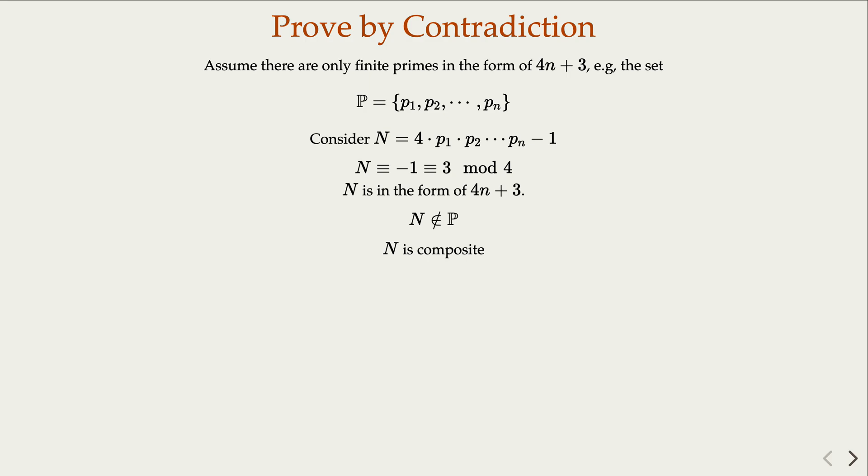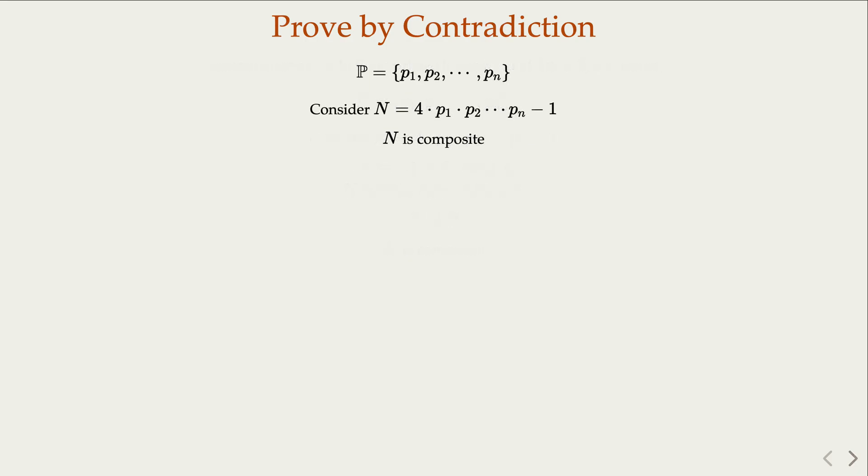Now, of course, with that, let's consider N is a composite number. Let's consider the prime factors of N. So we can make a few claims about that also. First of all, N itself is in the form of 4m plus 3, so we claim that N must have at least one prime factor in the form of 4m plus 3.